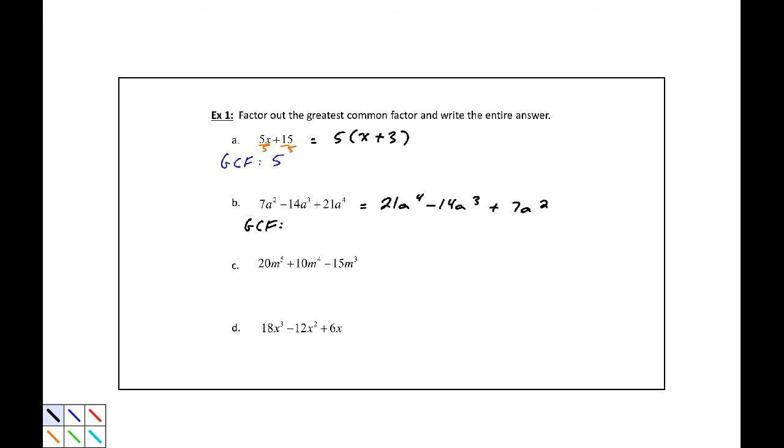So 7, and the smallest power we have is 2. So we're going to factor out a 7a squared is our greatest common factor. So 7a squared, parentheses, and here's where we'll do our dividing. 7a squared divided by 7a squared divided by 7a squared.